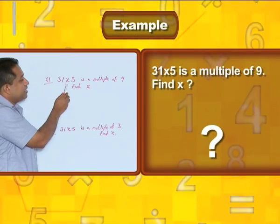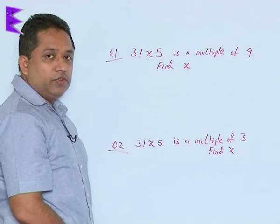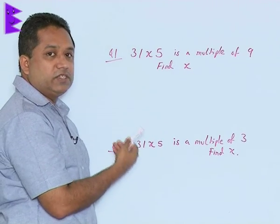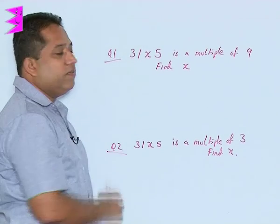Now here x is an unknown value, but it is given that this 4-digit number is a multiple of 9. So we have to use those properties of divisibility, test for divisibility to find out this value of x.